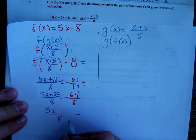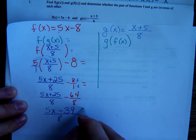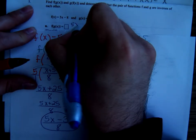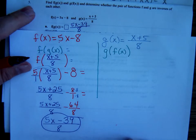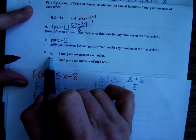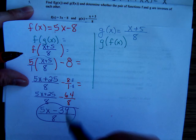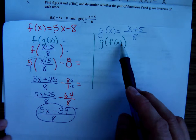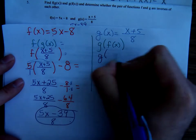So in this first box we would write 5x minus 39 over 8. And we don't know the answer to the second box yet, but we know the answer to c. Are these inverses of each other? No. In order for them to be inverses we should be getting x for both of these. Well still got to go through and find this one over here. Let's see, what are we going to get?